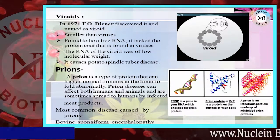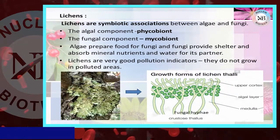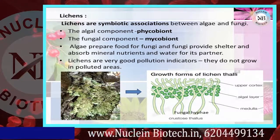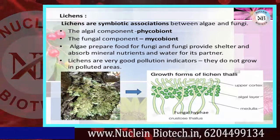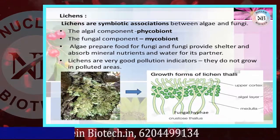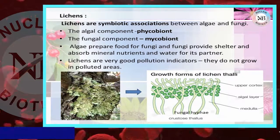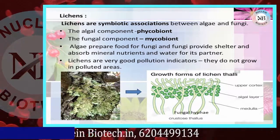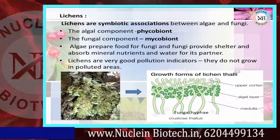Lichens are a symbiotic association between algae and fungi. The algal component is called phycobiont and the fungal component is called mycobiont. Algae prepare food for the fungi, and fungi provide shelter and absorb mineral nutrients and water for their partner. Lichens are very good pollution indicators — they do not grow in polluted areas.